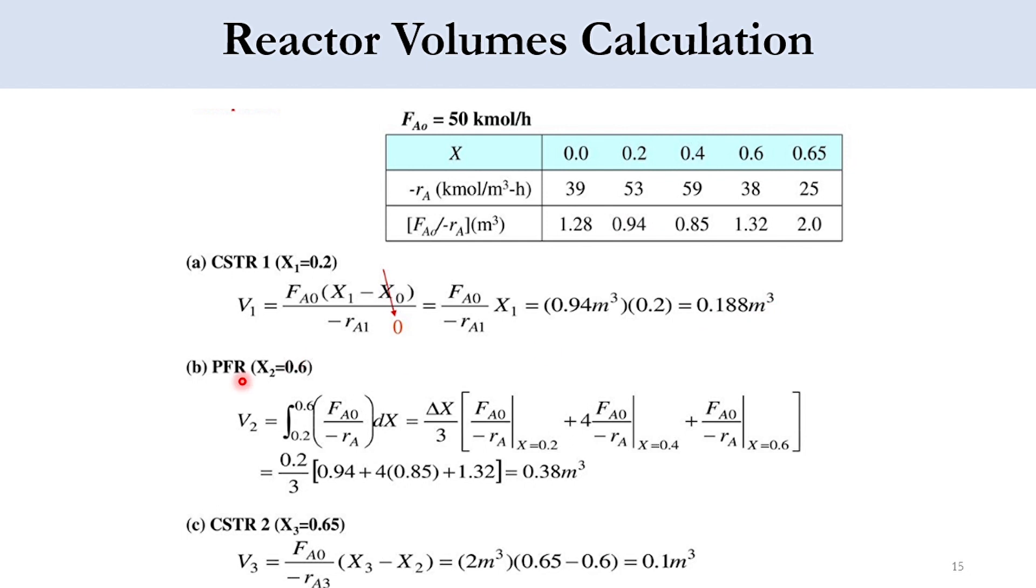For PFR where we got the conversion of 60%, obviously initially 20% conversion takes place in the CSTR, so our starting point x0 will be 0.2 and the ending point will be 0.6. So V2 equals integral from 0.2 to 0.6 of FA0 over minus RA dx. Applying the Simpson one-third rule: delta x over 3 times FA0 over minus RA at x equals 0.2, plus 4 times FA0 over minus RA at x equals 0.4, plus FA0 over minus RA at x equals 0.6. Delta x is 0.2 divided by 3, this value at 0.2 is 0.94, 4 multiplied by 0.85 and 1.32. Accordingly, PFR answer is 0.38 cubic meter.